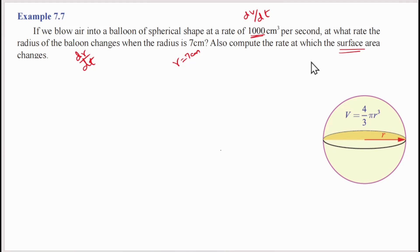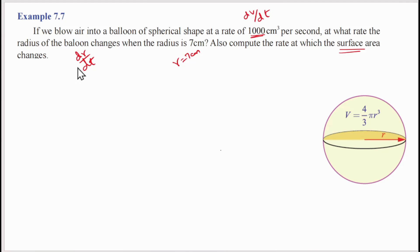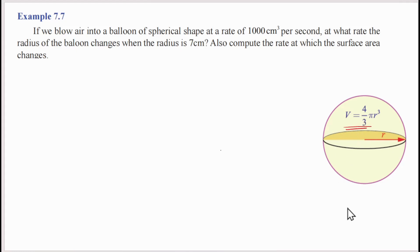We write S for surface area, so ds/dt is what we need. The volume of a sphere is V = 4/3 π r³, and the surface area of a sphere is S = 4π r². These two formulas are needed to complete the problem.